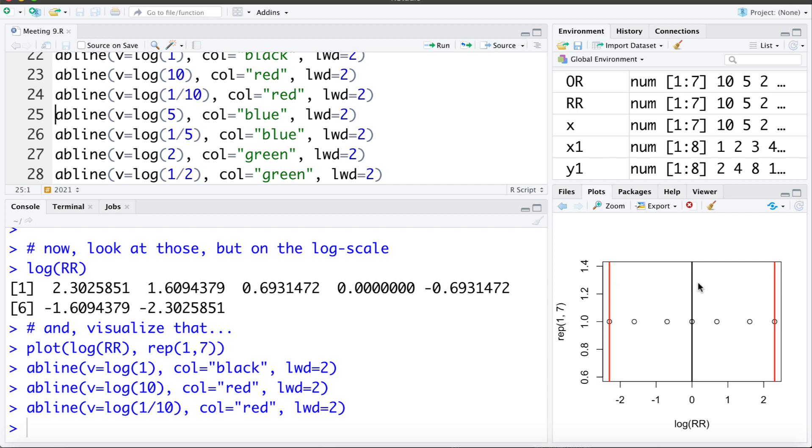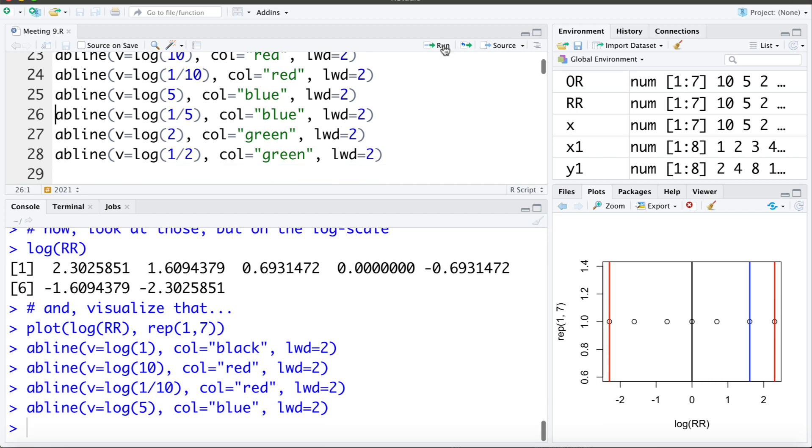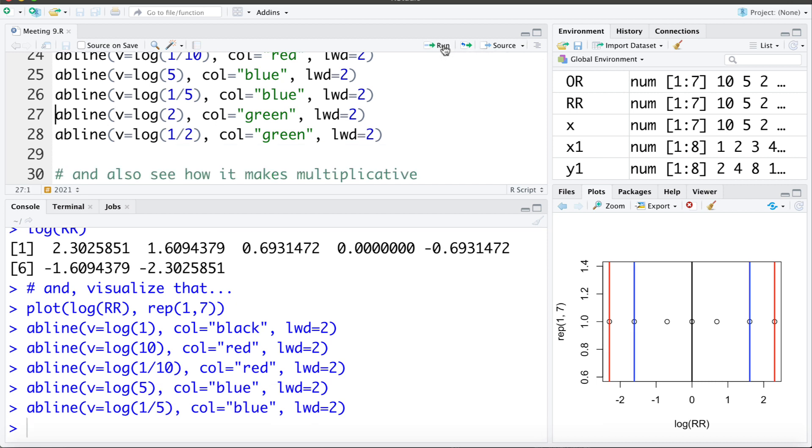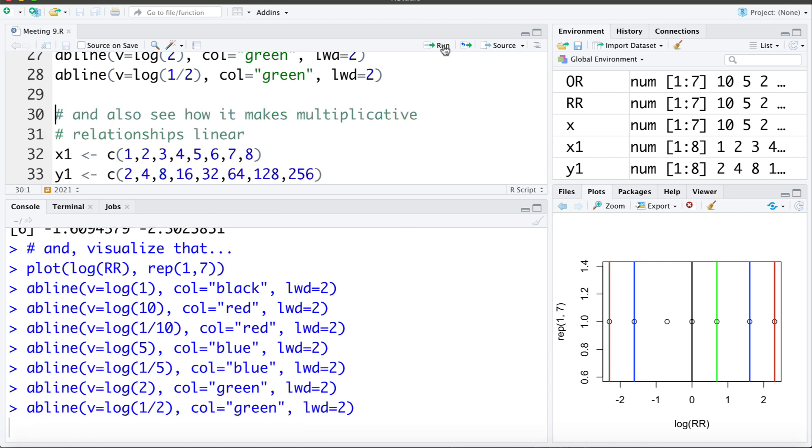Let's add lines at log of 5 and log of 1/5. Again, these are the same distance from the null value on the log scale. And the line for log of 2 and log of 1/2. Since the rate ratio is a measure on a multiplicative scale, working on the log scale addresses that - it makes the distance between 2 and 1/2 be the same.